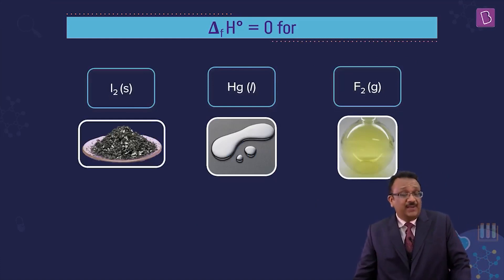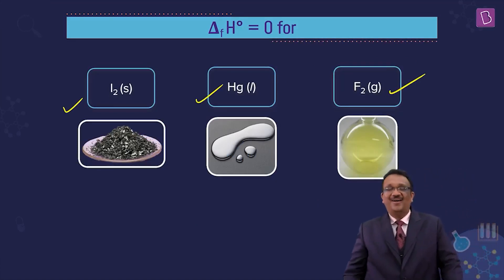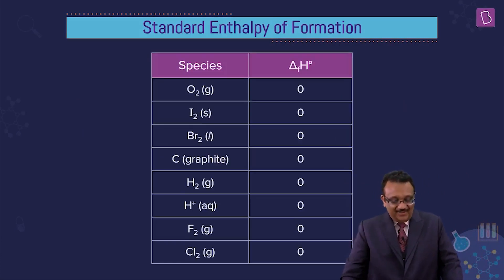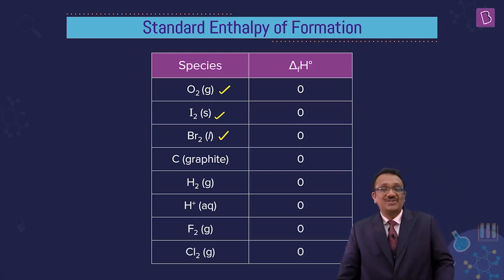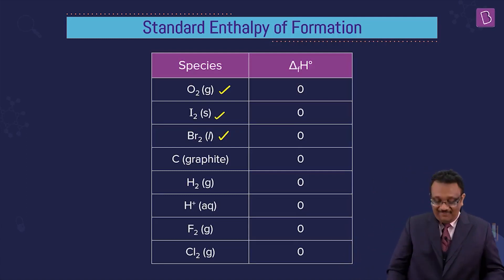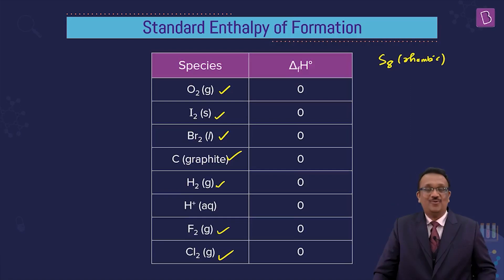Iodine solid enthalpy of formation zero, mercury liquid, fluorine gas, oxygen standard state, iodine solid, carbon standard state graphite not diamond, hydrogen H2, fluorine F2, chlorine Cl2. Sulfur S8 rhombic form is the standard state.